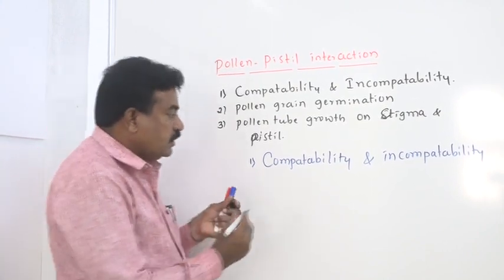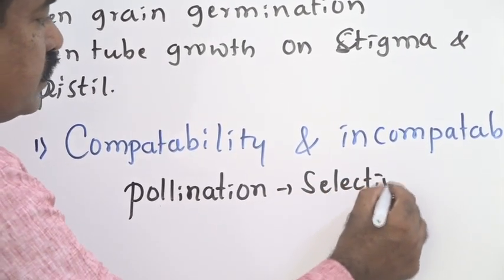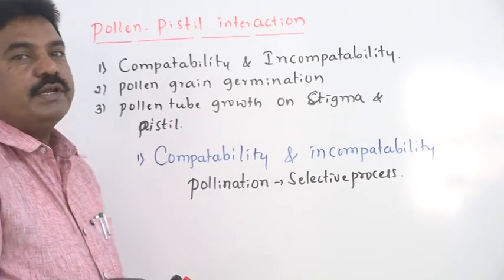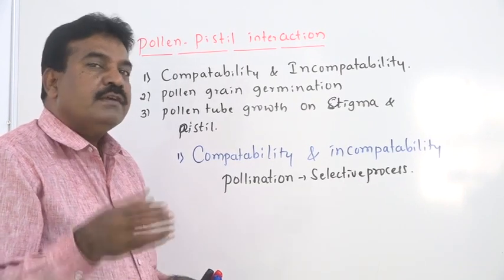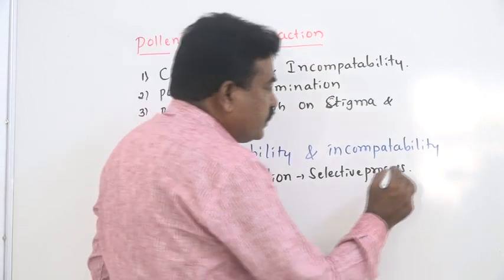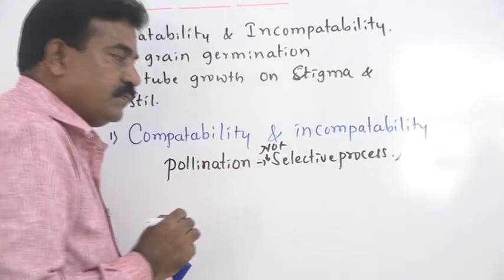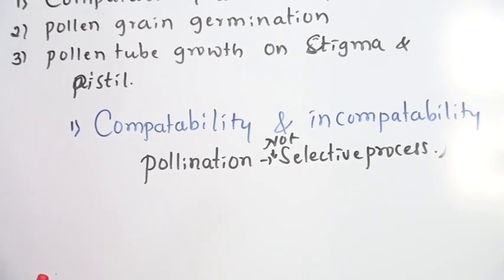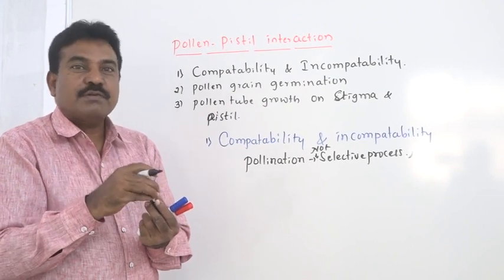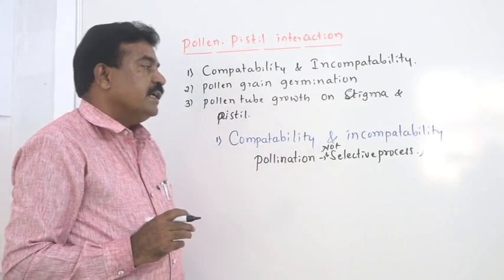During the pollination process, pollination is not a selective process. That means the pollen grain of a hibiscus flower does not necessarily transfer only to a hibiscus stigma, or rose pollen grains only to rose. All pollen grains may be transferred by the pollinating agent — on a rose stigma, there may be rose, sunflower, hibiscus, or other plant pollen grains. Therefore, pollination is not a selective process.